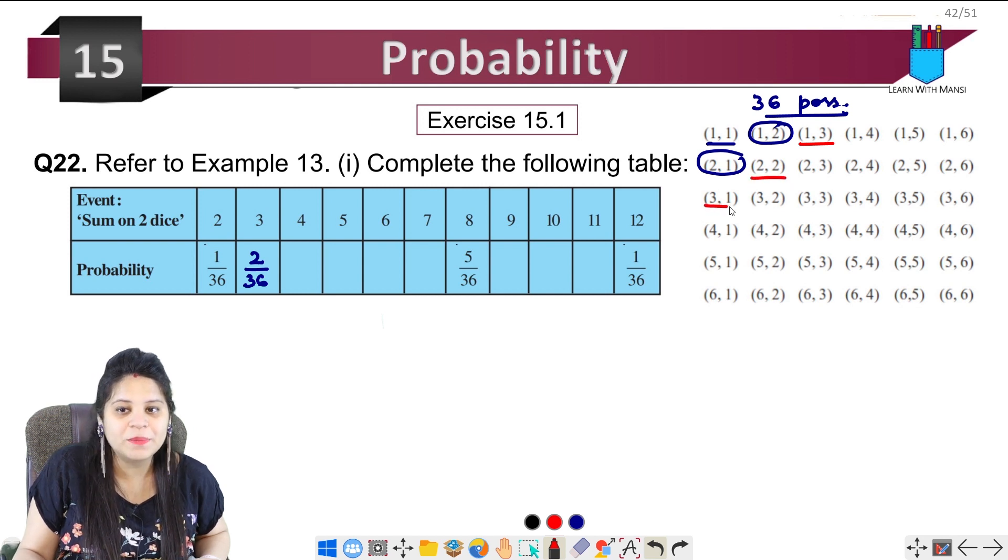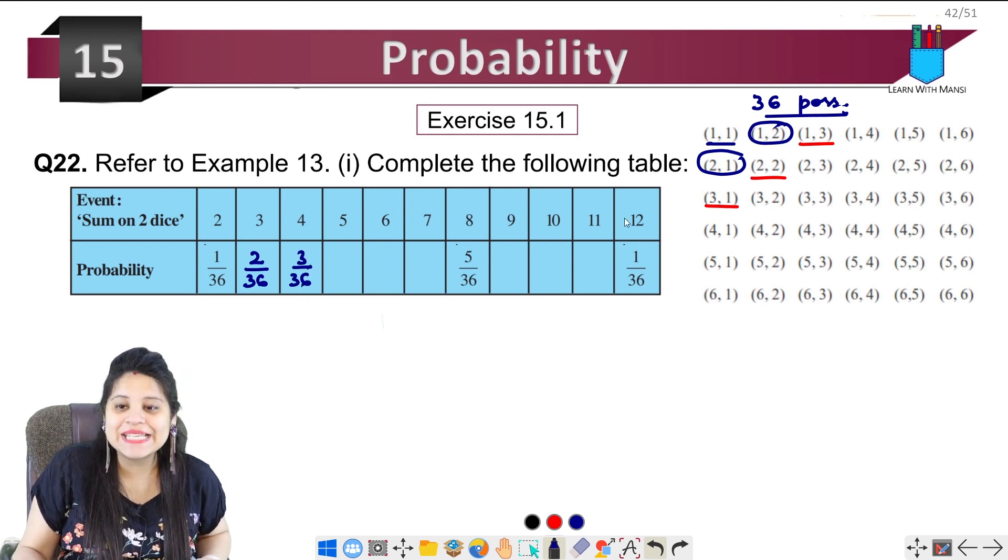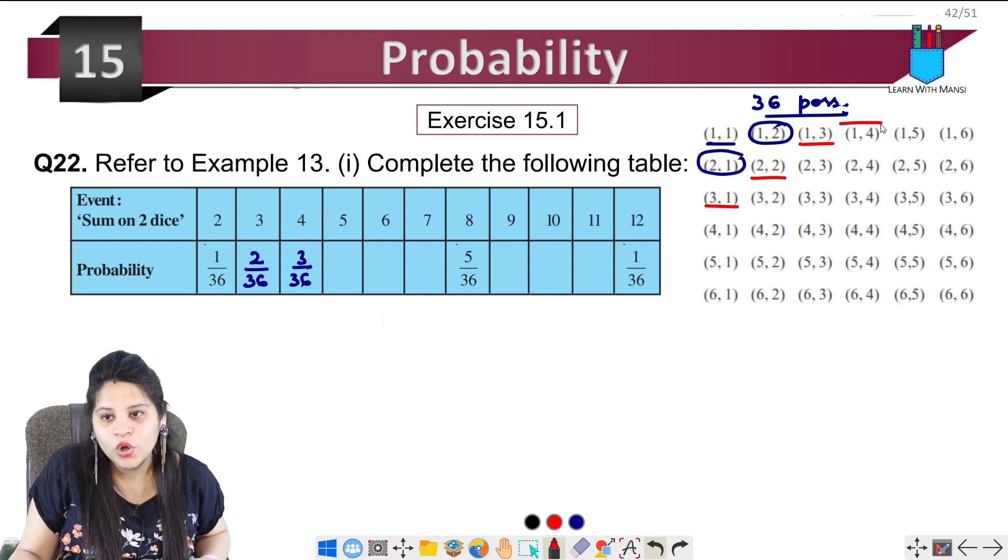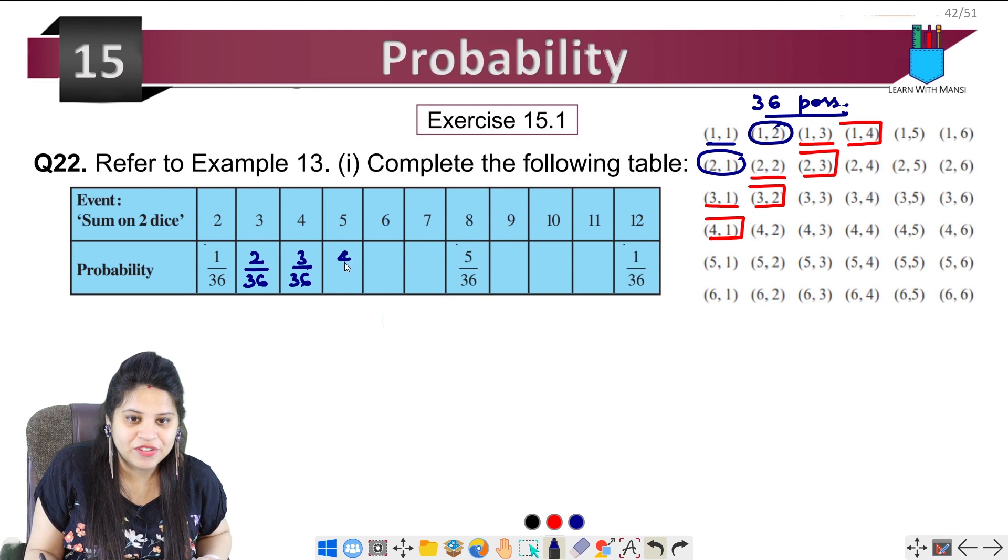So there are three possibilities, 3 upon 36. Okay, you have 5: 5,1; 4,1; 2,3; 3,2; 4,1. So 1, 2, 3, 4 - four possibilities. 4 is our favorable outcome upon 36.